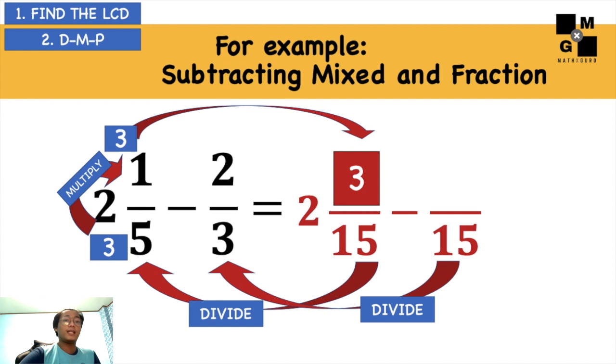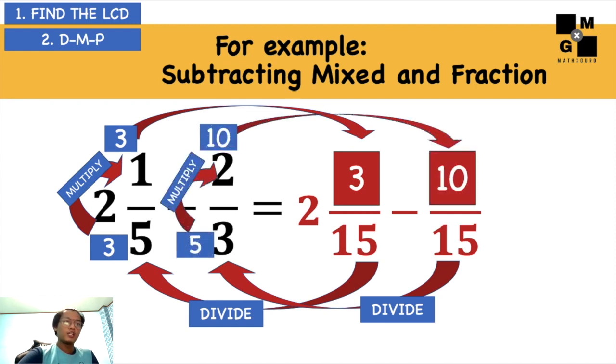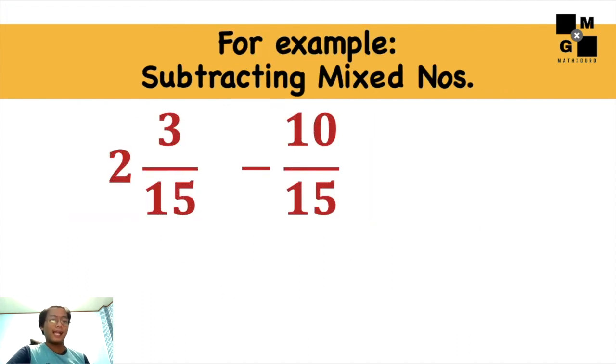Next, 15 divided by 3 is 5. 5 times 2 is 10, and then put 10 there. So as you can see, we cannot subtract the numerators because the first given is lesser than the second given. 3 minus 10, it cannot be. So this is where regrouping applies.